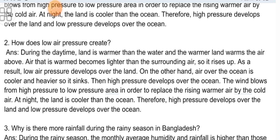Descriptive Question 2: How does low air pressure develop? During the daytime, land is warmer than the water and the warmer land warms the air above. Air that is warmed becomes lighter than the surrounding air, so it rises up. As a result, low air pressure develops over the land. On the other hand, air over the ocean is cooler and heavier, so it sinks, and high pressure develops over the ocean. The wind blows from high pressure to low pressure area to replace the rising warmer air with cold air. At night, the land is cooler than the ocean; therefore, high pressure develops over the land and low pressure develops over the ocean.